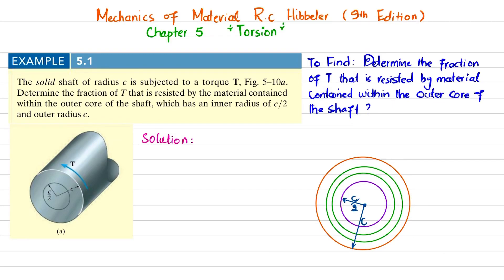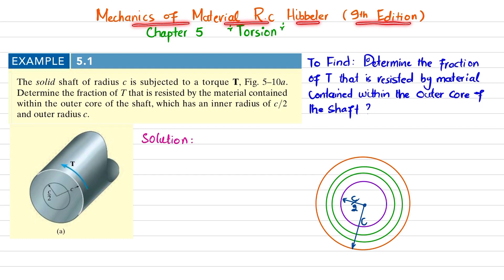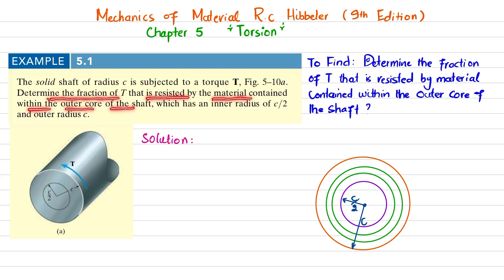Welcome back. In this video we are going to solve Example 5.1 taken from Chapter 5, Torsion, from the book Mechanics of Materials by R.C. Hibbeler, 9th edition. The problem states: a solid shaft of radius c is subjected to torque T. Determine the fraction of T that is resisted by the material contained within the outer core of the shaft, which has inner radius c/2 and outer radius c.